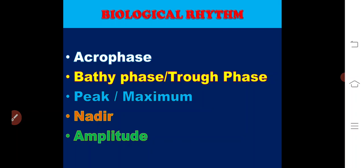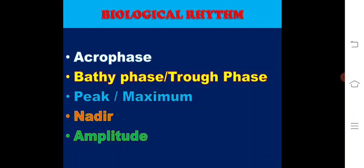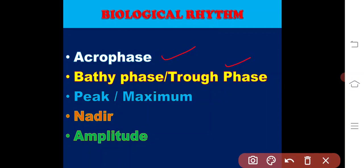Within each cycle of the biological rhythms, the time period during which the process is more active is called the acrophase. When the process is less active, the cycle is in the bathyphase or trough phase. The particular moment of highest activity is called the peak or maximum. The lowest point is the nadir.